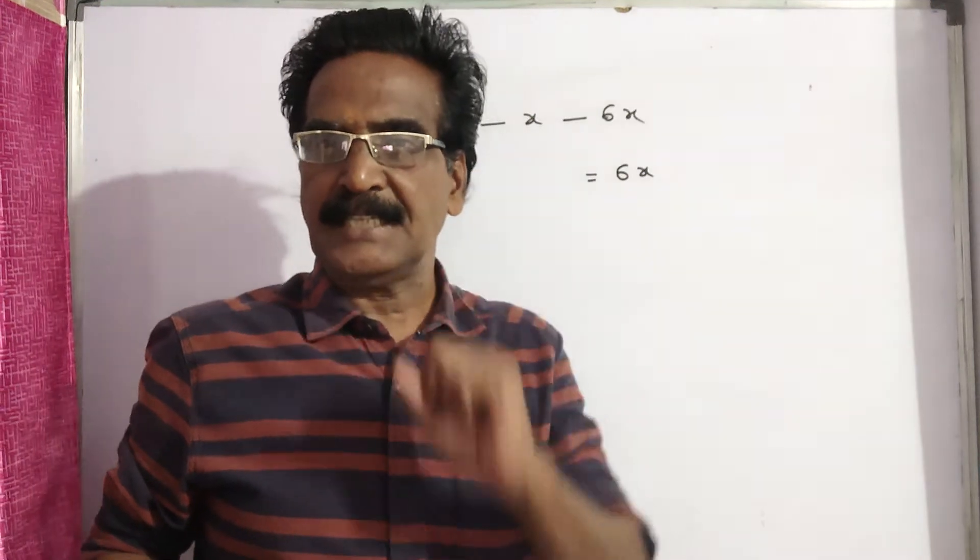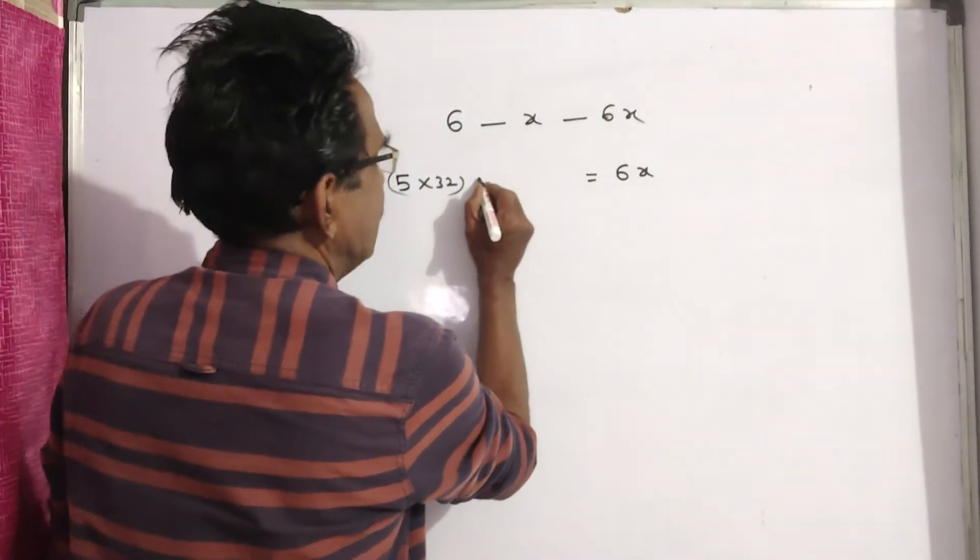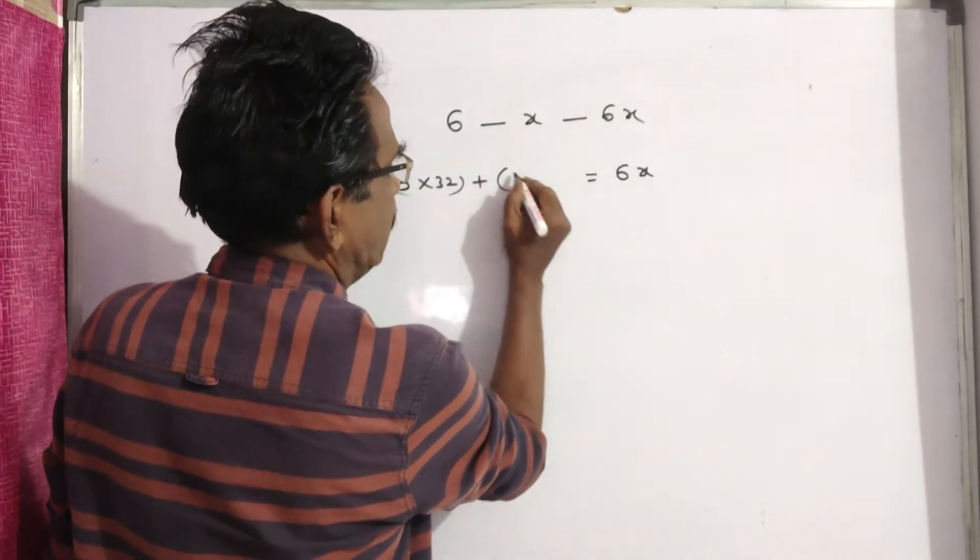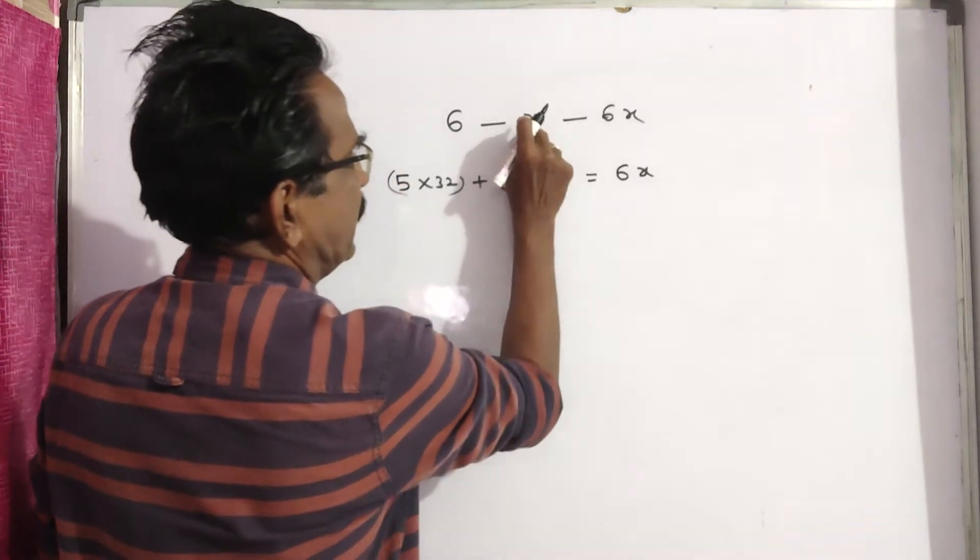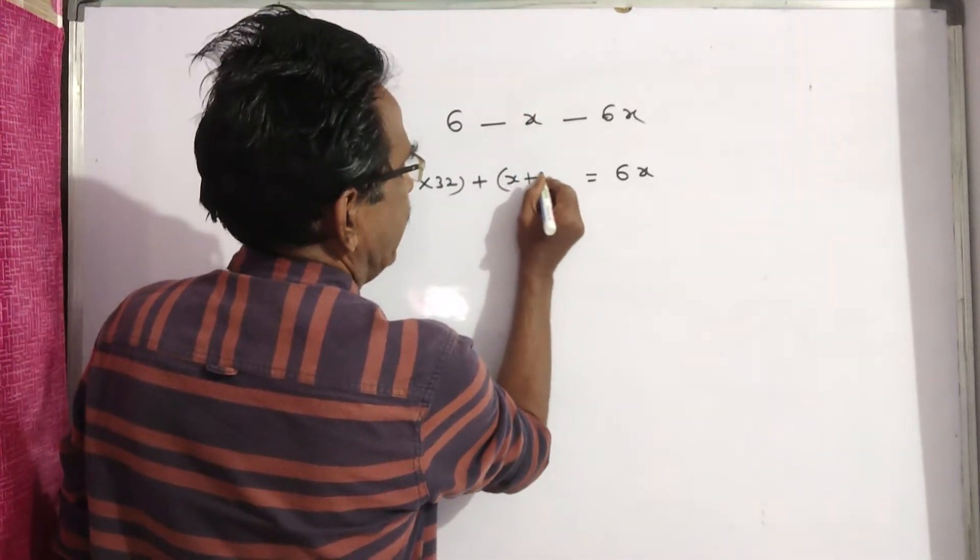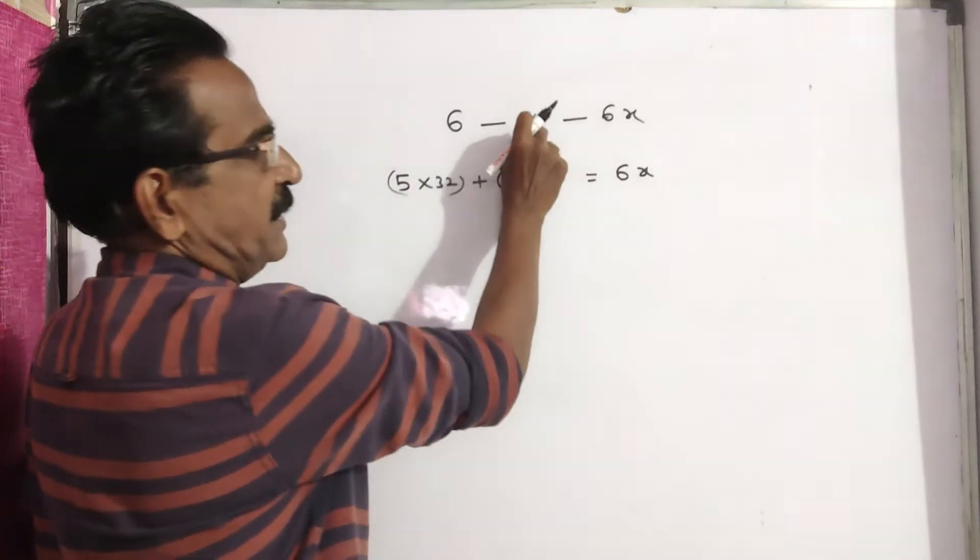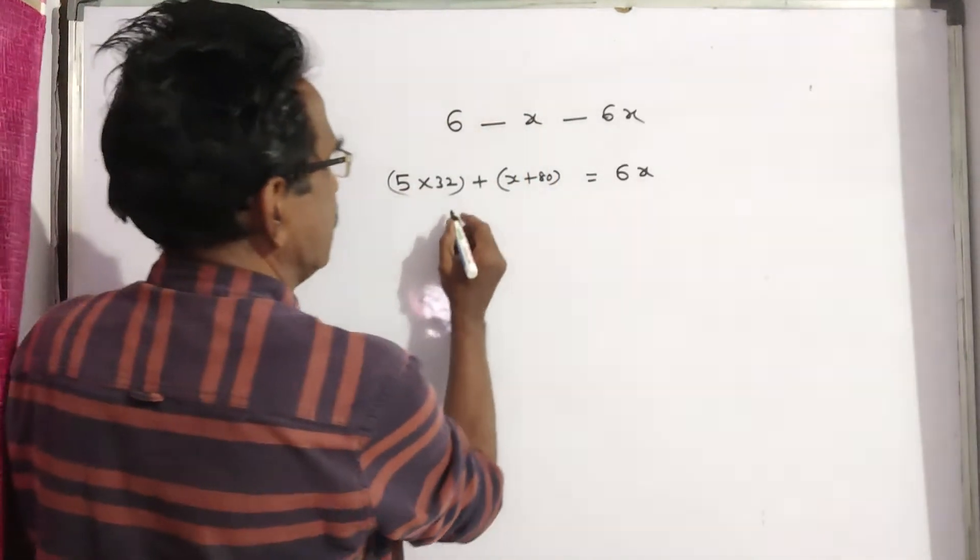5 persons spent 32 rupees each and the 6th person spent 80 rupees more than the average of all 6 members.